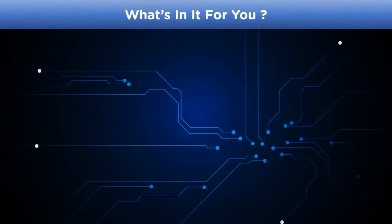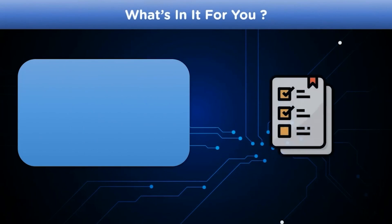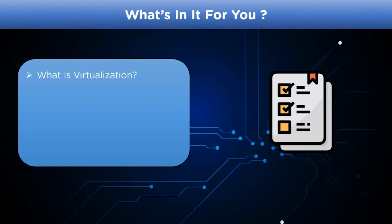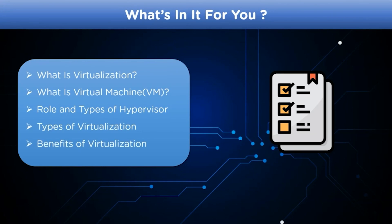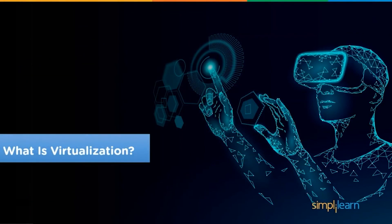To begin with, we'll look at what exactly virtualization is and how it can help us. Then we'll understand what virtual machines are, followed by the role and different types of hypervisors involved in the process. After that, we'll learn what different types of virtualizations are available and how they affect our systems. Lastly, we'll see what benefits virtualization provides.